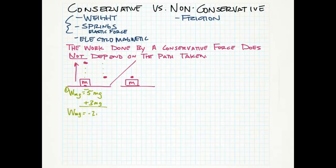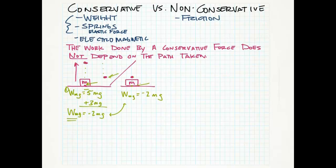Gravity is pulling down, we lifted the thing up, but we're just talking about the work done by gravity. In situation two, we go straight from here to our final spot. The work done by weight in this case is two units up times MG, but that's in the opposite direction of our weight, so it's negative. And we see here that it doesn't matter how we got from start to finish — whether we went straight there or in a roundabout way — either way we end up with the same amount of work.